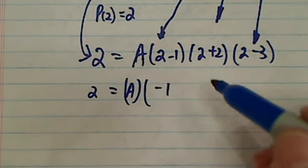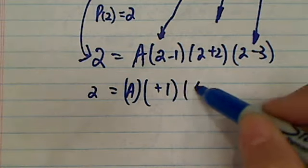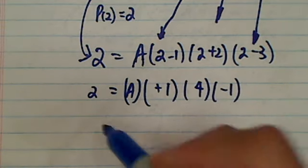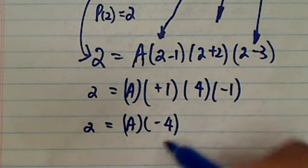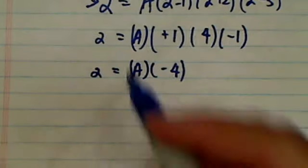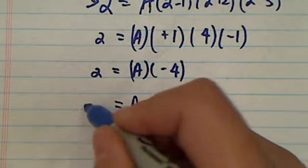So A, this is minus one positive one, this is a four, this is minus one. So you have two is equal to A times minus four. From here it's pretty easy to say that A is really equal to minus half.